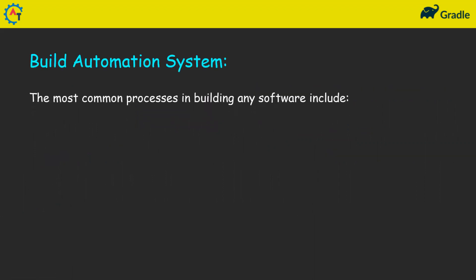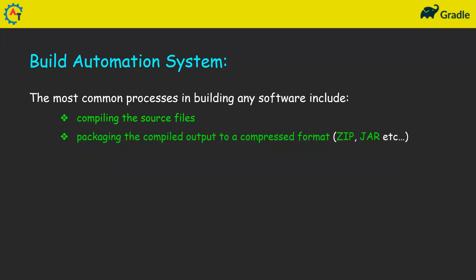The most common processes in building any software include compiling the source files — so once you have written some code you need to compile the source files. Then you need to package the compiled output in a compressed format, which might be a ZIP, JAR, EXE, DLL, or similar, depending on your programming language.